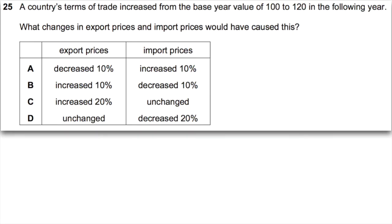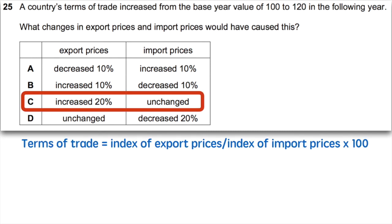Give this question a shot from the CIE Paper 1 in 2016 as published on the CIE website. A country's terms of trade increased from the base year value of 100 to 120 in the following year. What changes in export prices and import prices would have caused this? Take a second to pause the video and try to pick the right answer. When you click play, I'll explain the correct choice. Now that you have had some time to try it, you should have selected option C.